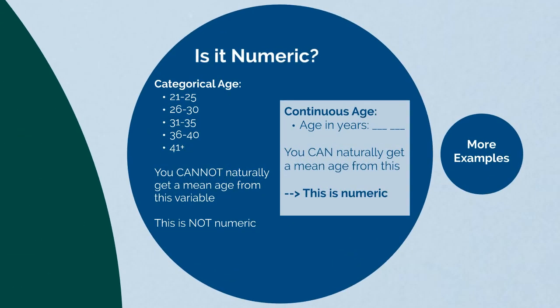So how do you know? Going back to the age example: on the left is categorical age. If people are selecting a checkbox, you cannot naturally get a mean because people could be 21 or 25 — what value would you use? That is not a numeric variable; it is in groups. Meanwhile, on the right, continuous age — where somebody simply enters their current age in years — you can naturally calculate a mean. This is a numeric variable.